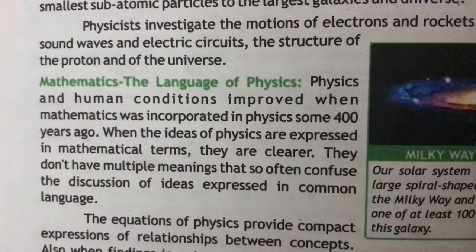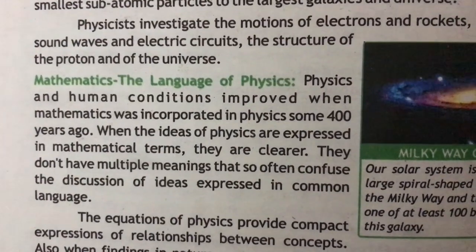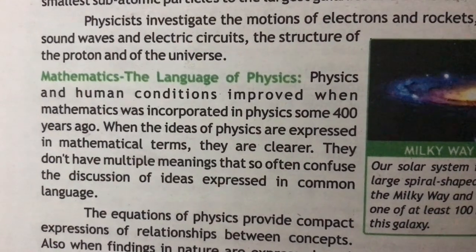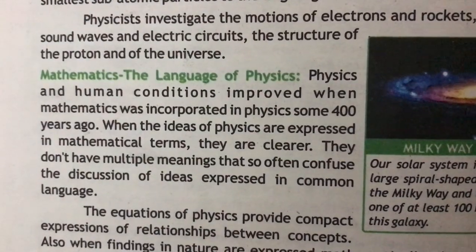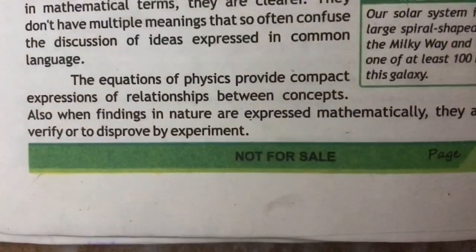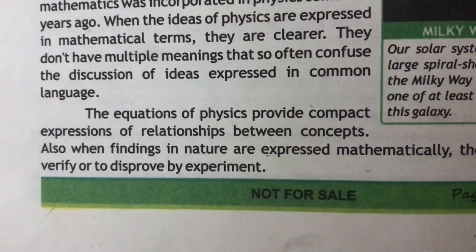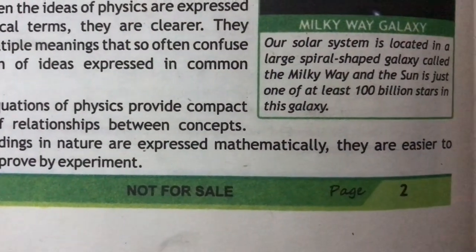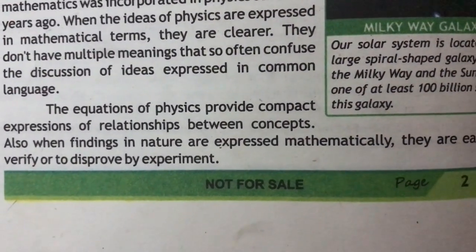Mathematics is the language of physics. Physics and human conditions improved when mathematics was incorporated in physics some 400 years ago. When the ideas of physics are expressed in mathematical terms, they are clearer and don't have multiple meanings that so often confuse discussion. The equations of physics provide compact expressions of relationships between concepts, and when findings in nature are expressed mathematically, they are easier to verify or disprove by experiment.